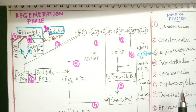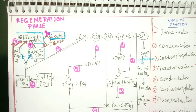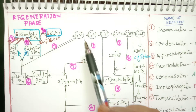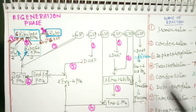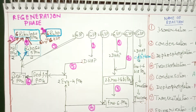The third phase is the regeneration phase, meaning regeneration of the primary acceptor of carbon dioxide, RuBP. The 12 G3P molecules are involved in a series of reactions in the stroma of the chloroplast. I will now explain the reactions one by one, including the name of each reaction and the enzyme involved — this is very important.